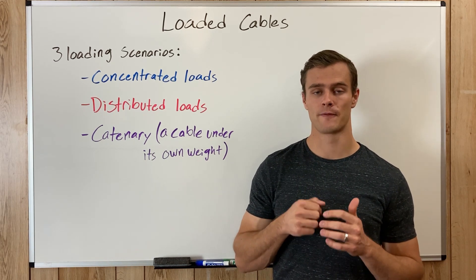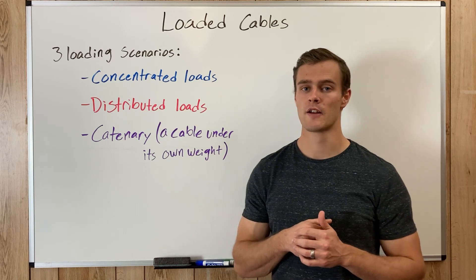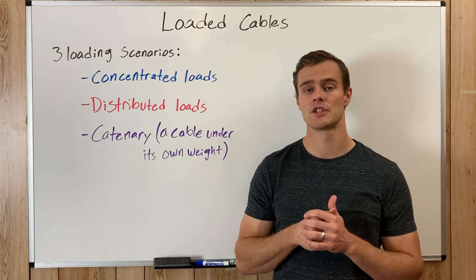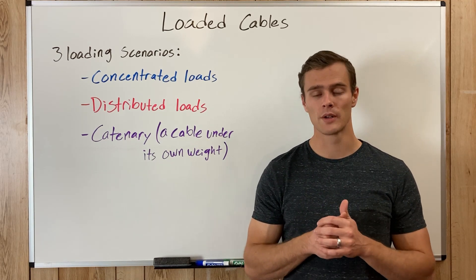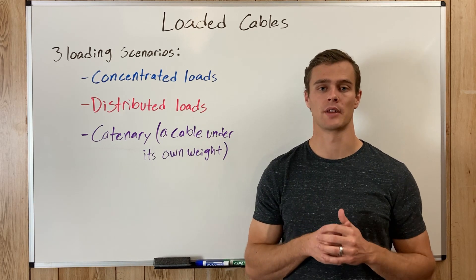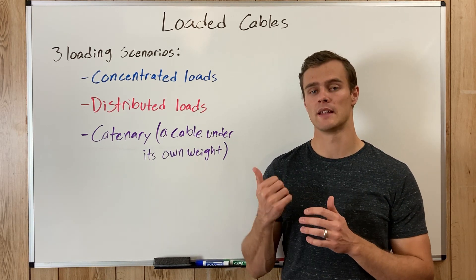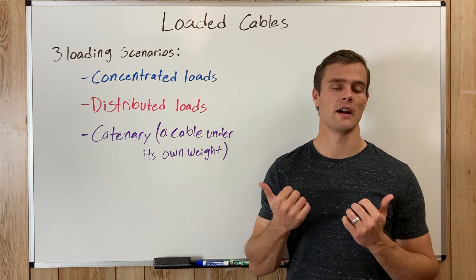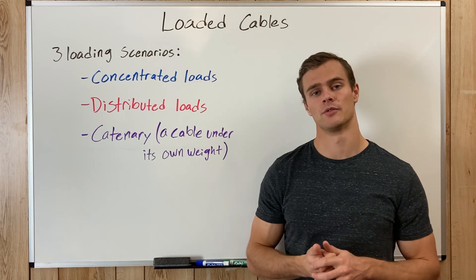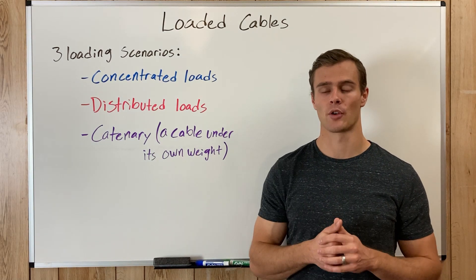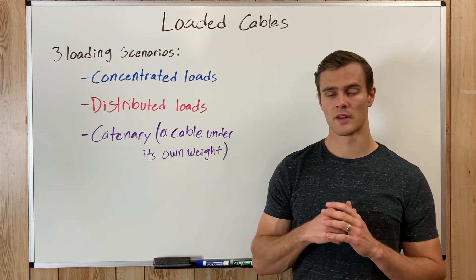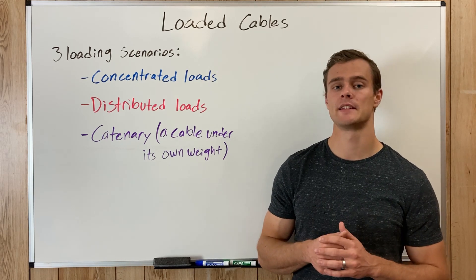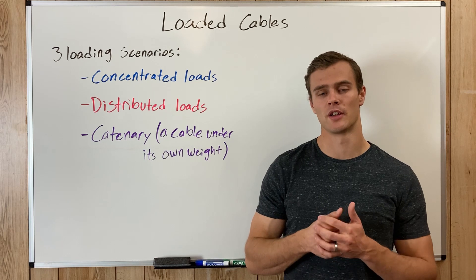Something important to know about the forces in the x direction — not only for concentrated loads, but for distributed loads and catenary loads — is that the tension in the horizontal direction is always going to be the same throughout the cable. So if your reaction at one end is, say, 10 kilonewtons, the reaction force in the x direction at the other end is also going to be 10 kilonewtons. It stays the same throughout the cable. If you want a video explaining more of that in detail, you can click the video link.